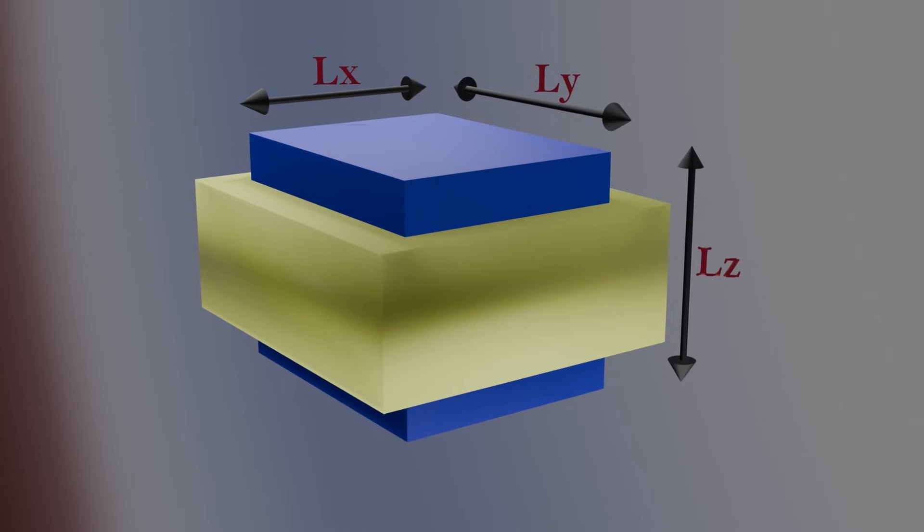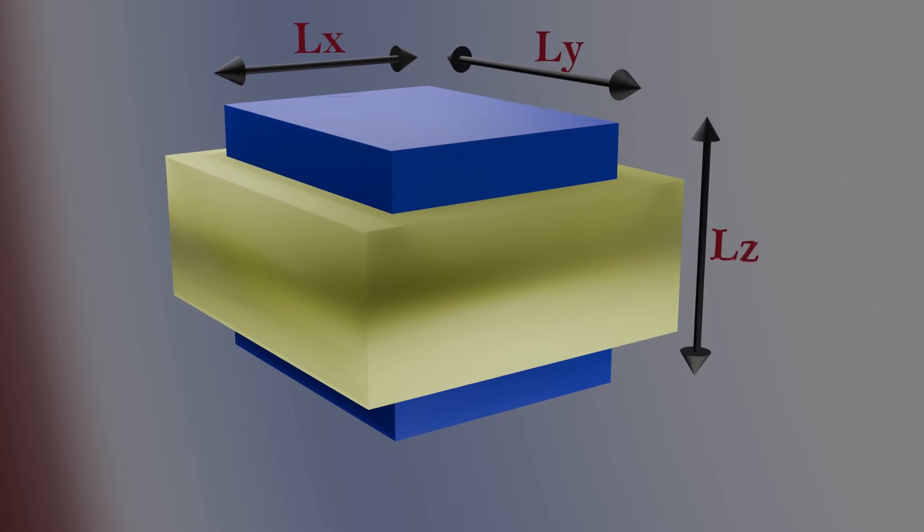Its original dimensions are Lx, Ly, and Lz. After applying the compressive load, these dimensions change. We represent these changes as Δx, Δy, and Δz.